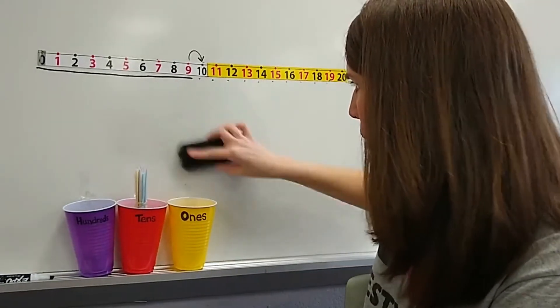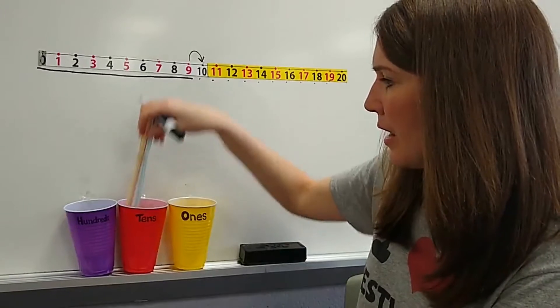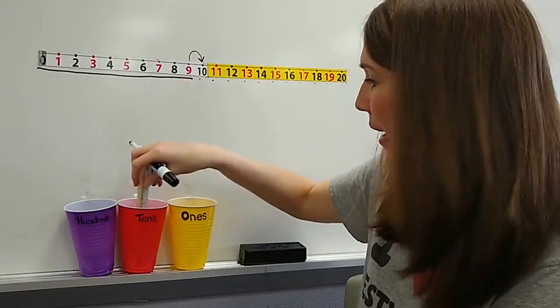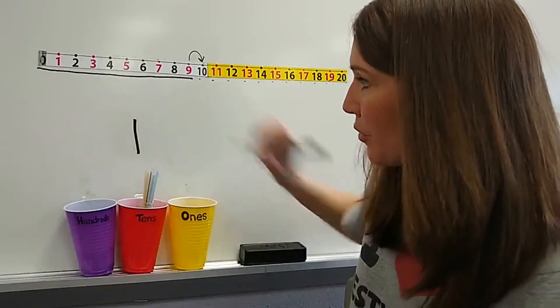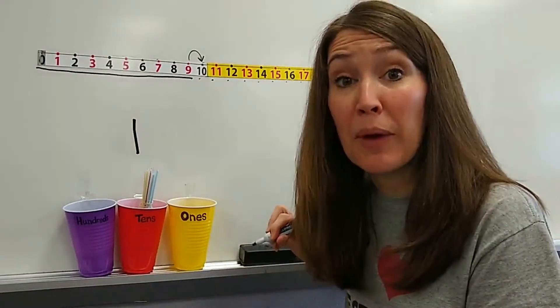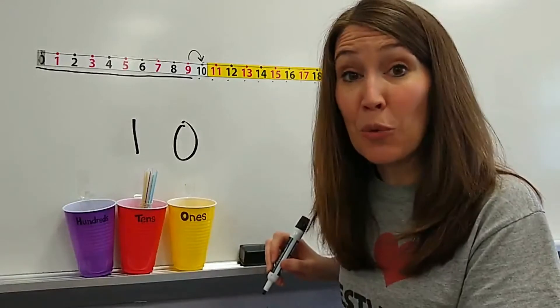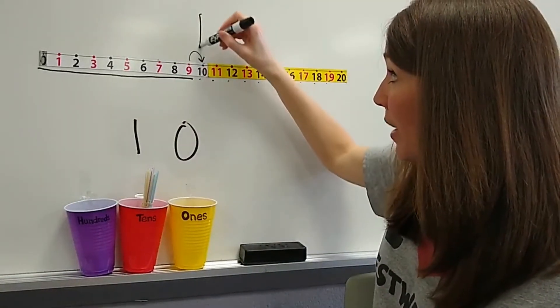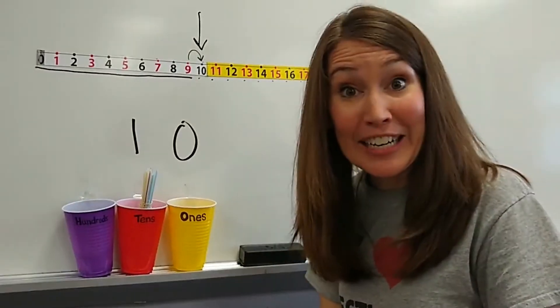And we're going to record what we have now. I have how many groups of 10? How many tens do I have? One group of 10. And how many ones do I have? Zero. One group of 10 and zero little ones. Our number here is 10.